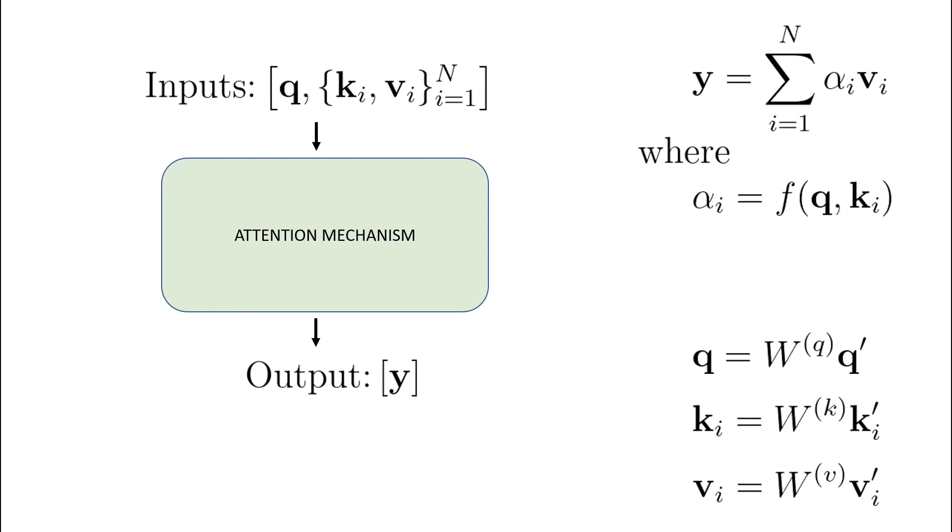The q dash, k dash, and v dash denote the query, keys, and values that we have so far been using in our equations. The fixed size matrices, wq, wk, and wv, are then the parameters that can be learnt by the model and it can be trained to perform as well as possible on the task at hand by updating these parameters. And that is attention for you.